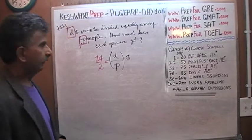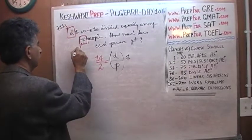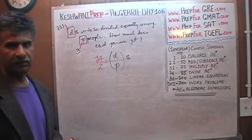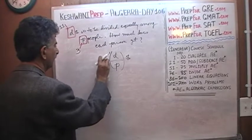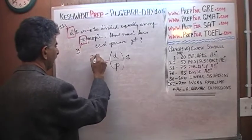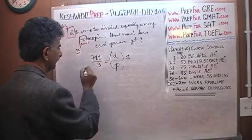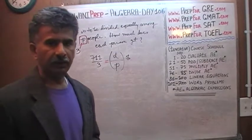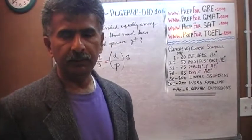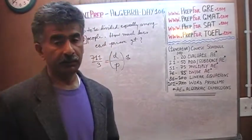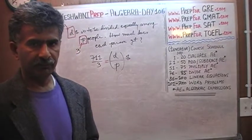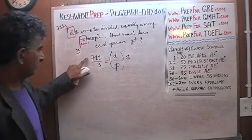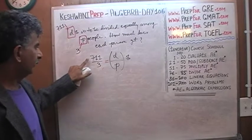If 711 is to be divided equally among 3 people, how many does each person get? Well, the answer is 711 divided by 3. Now the question is: is 711 divisible by 3, evenly divisible by 3? That's the question. To which the answer is yes, 711 can be divided evenly into 3. How do we know it?